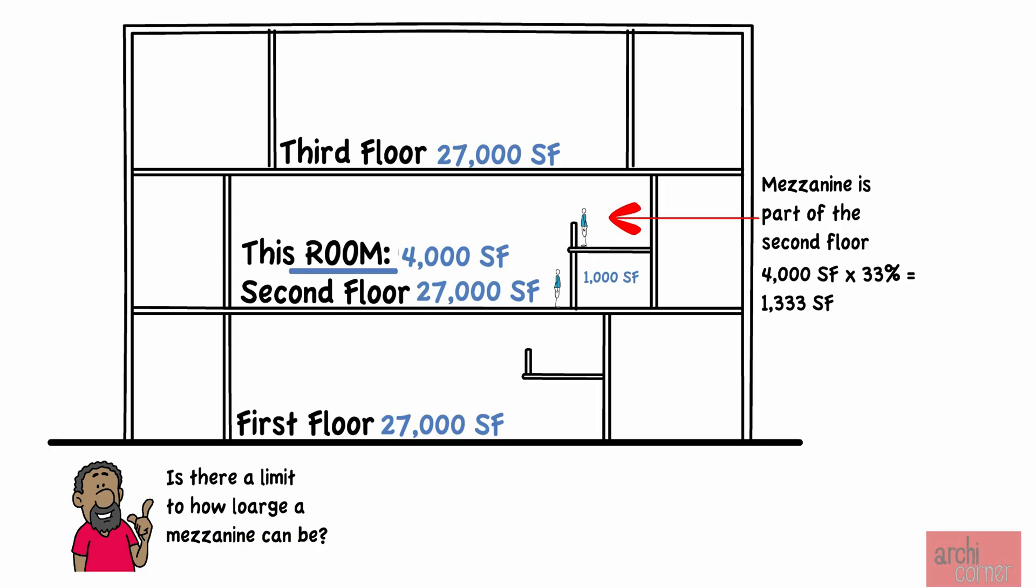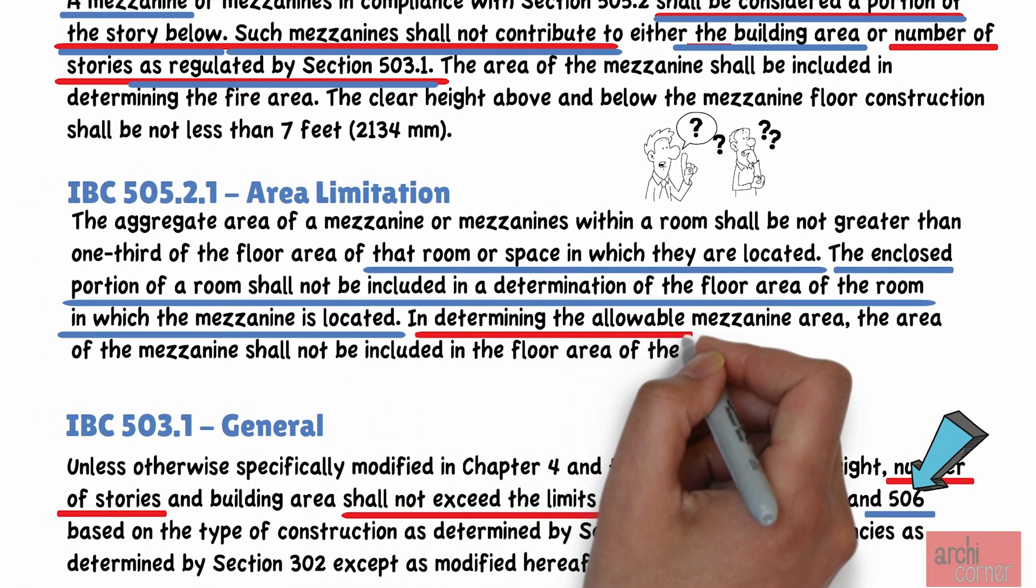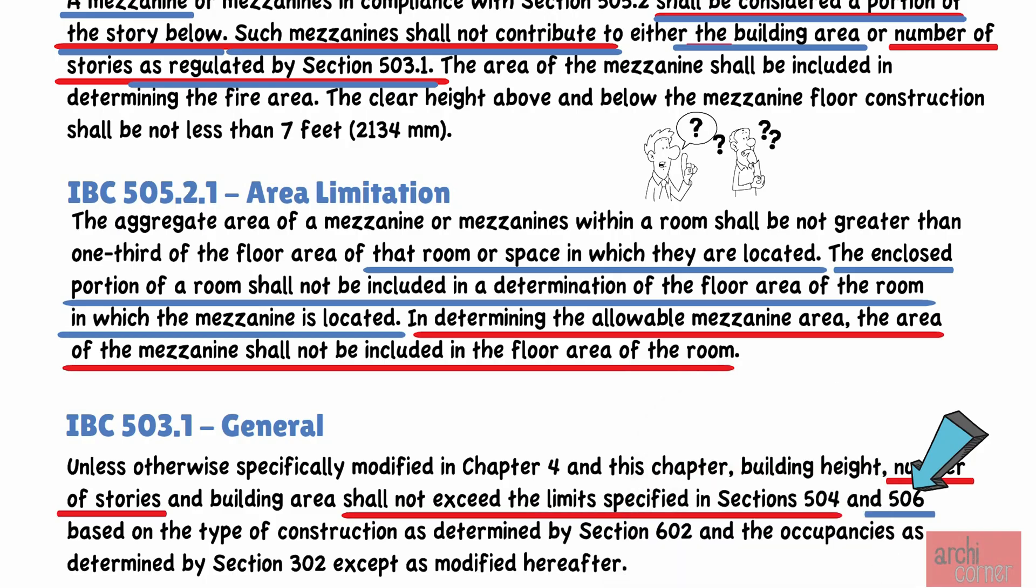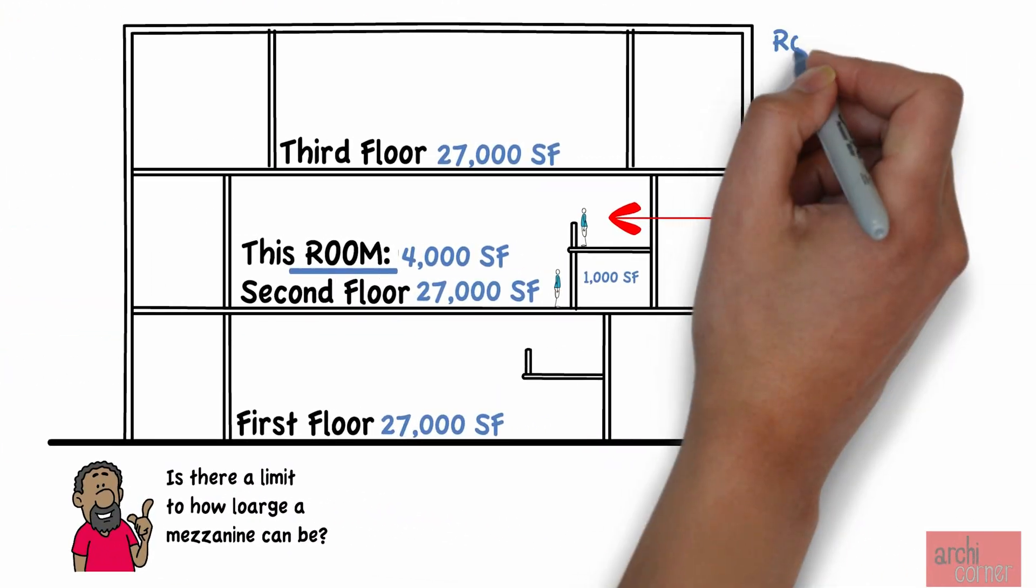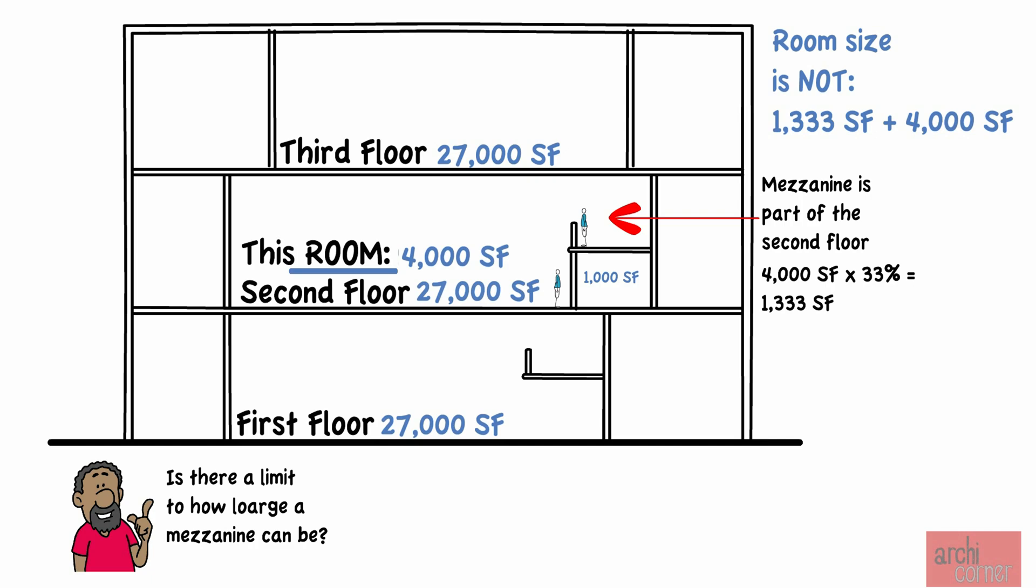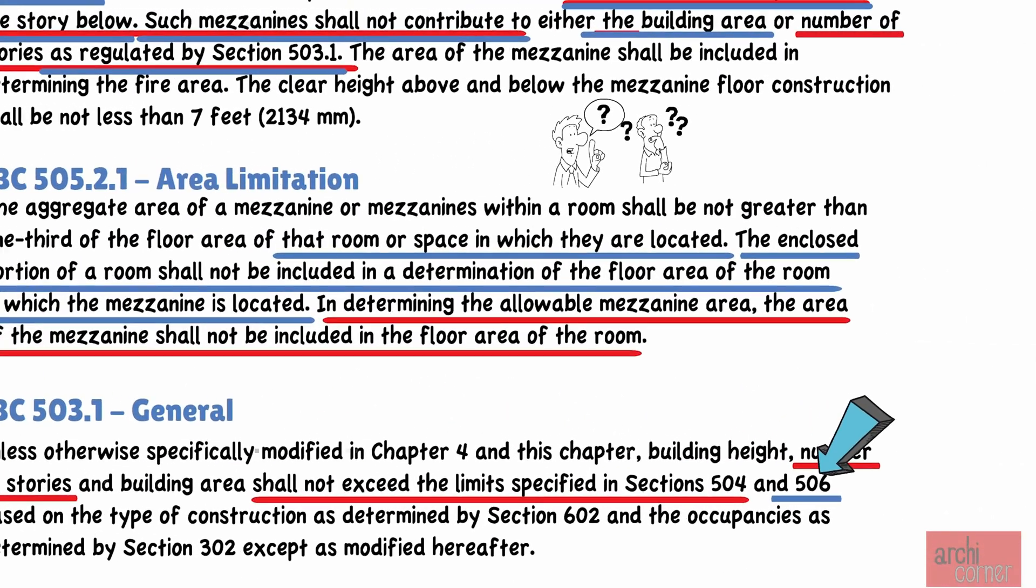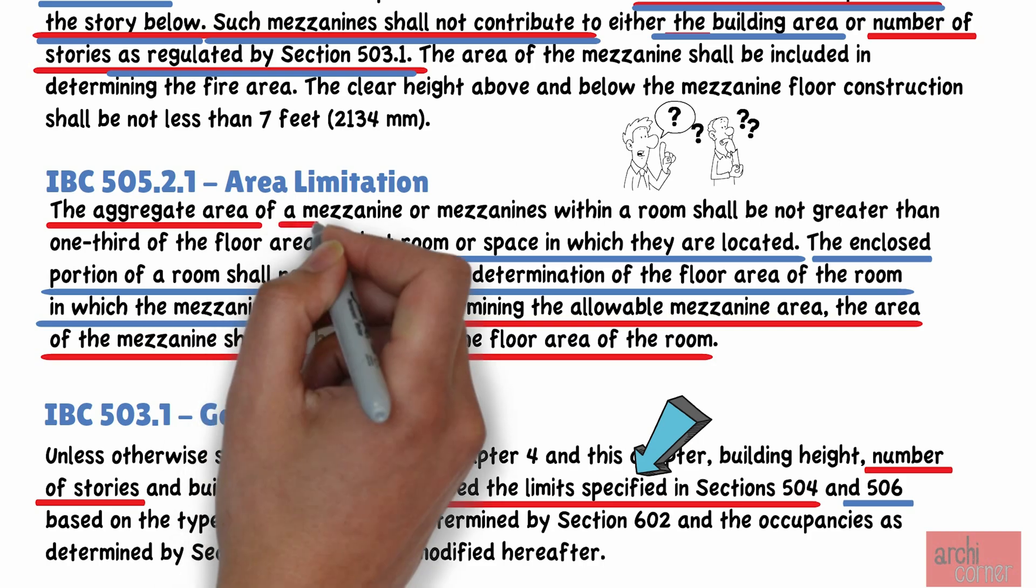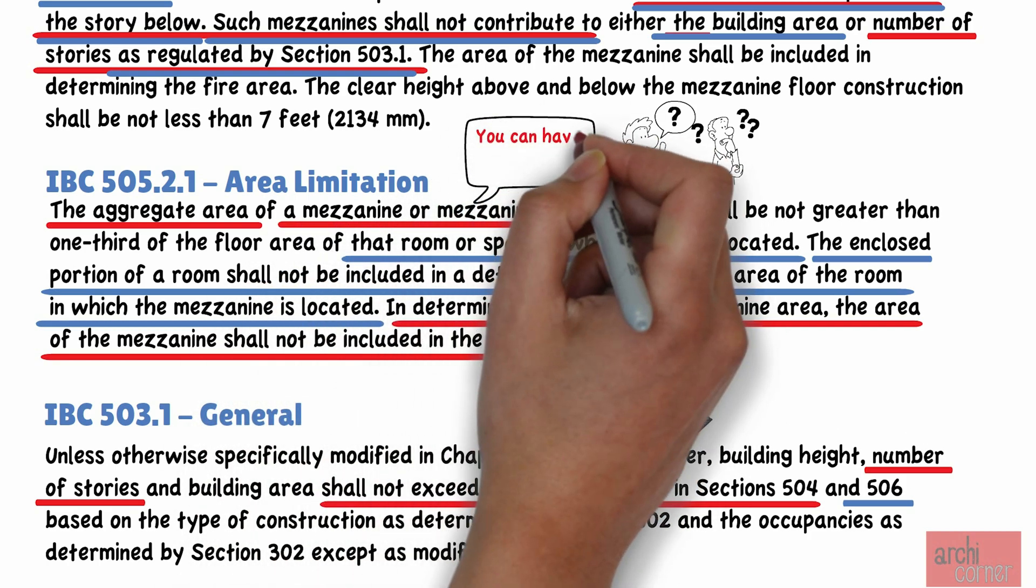And just to make sure we cover the entire section, the code also states that in determining the allowable mezzanine area, the area of the mezzanine shall not be included in the floor area of the room. In other words, using our example, we cannot state that the square footage of our room is 1,333 plus 4,000 square feet, because the mezzanine cannot be part of the base number used to determine its own size. Also, have in mind that the total area of the mezzanine cannot exceed the allowance. What this means is that we can have multiple mezzanines, not just one, but the total square footage cannot exceed the allowable. That is why, at the beginning of section 505.2, it states, a mezzanine or mezzanines, because you can have more than just one.